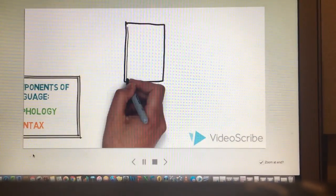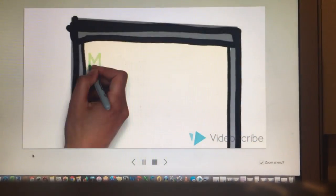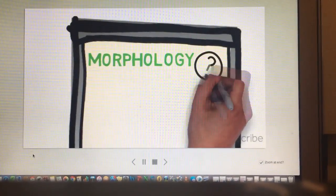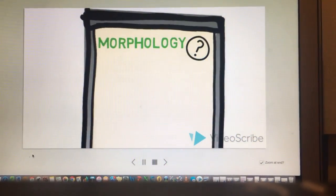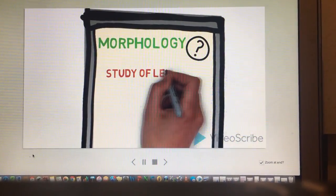To start off, we will be discussing morphology. So what is morphology? It is the study of letters and sounds combined to make meaningful units.